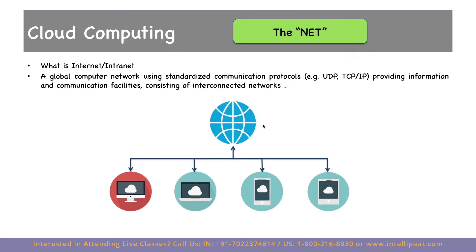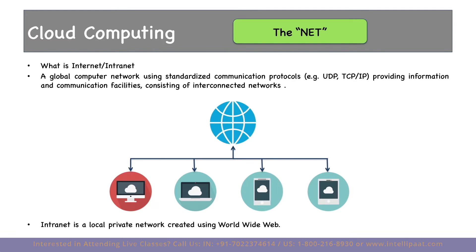If I send a WhatsApp message to you, I'm essentially using the internet. Then what is intranet? Intranet is the same concept but within the same network. For example, you might have multiple devices behind your router — laptop, desktop, smartphones, tablets — connected via a Wi-Fi router. All these devices are in a LAN, or local area network. They do not need internet to talk to each other, as communication can happen via the router. Intranet is a local private network created using the World Wide Web.